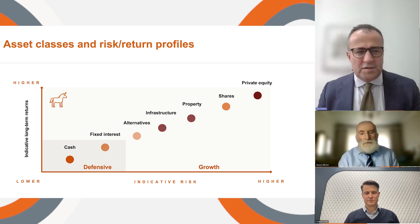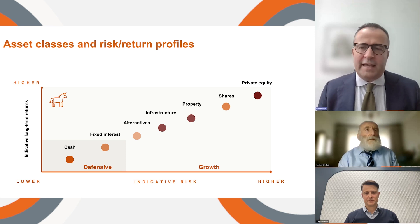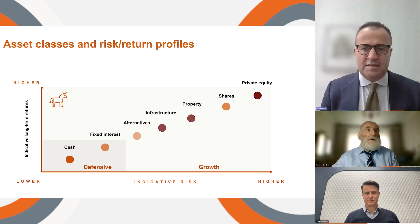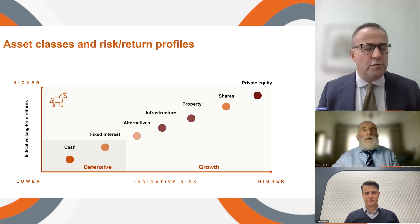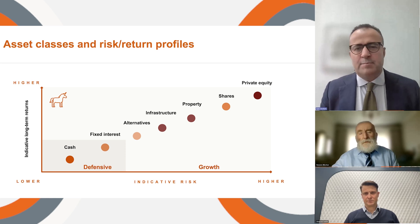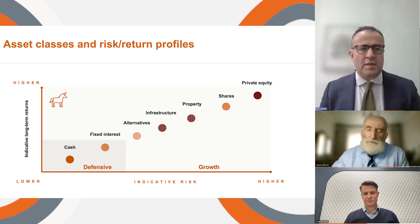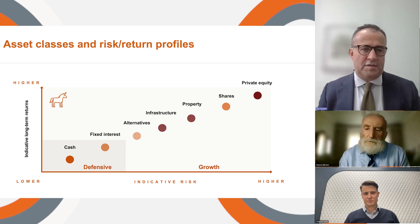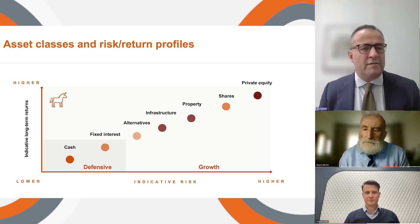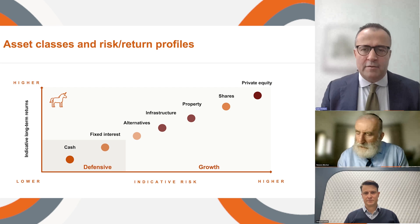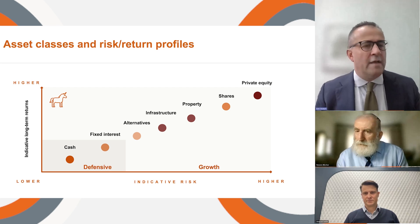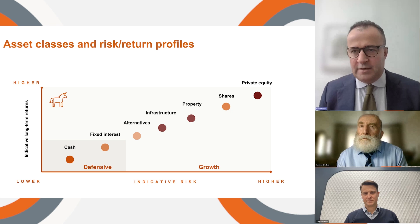Alternatives also sit at that midpoint. They can be listed or unlisted. Alternatives can be things like investing in water, through to more recently things like private credit, specialist forms of lending, catastrophe reinsurance and the like. The most important takeaway is that if the equity market goes up or down, the return behaviours in alternatives are very, very different. They're not linked to the share market.